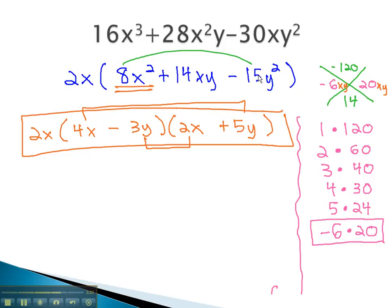Again, we do the GCF first and then use the AC method on the inside trinomial. Should the numbers get large using the AC method, we simply start making a list of possible factors of the top number to help us find the right combination that works.